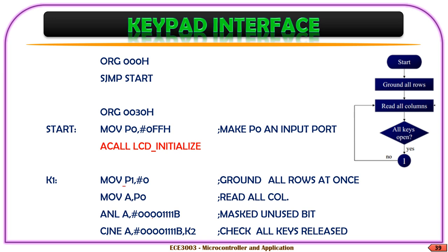Now moving on to keypad scanning: we make all the ports as input ports. We ground all the rows at once and read through the columns to see if any key pressing has happened. We have connected P0 to all the columns — only the lower four pins of the columns are connected. The higher four pins are not connected, so we have to mask the higher four bits. In case the higher four pins are connected to some other interfacing kits, we don't want outputs from those pins affecting our calculations.